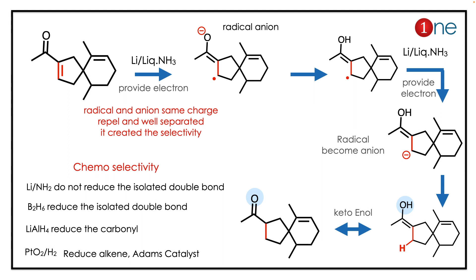The final product comes from keto-enol tautomerism, giving the desired product. The reagent is sodium in liquid ammonia. Here you should understand chemoselectivity — among many functional groups, only one reacts. For example, B₂H₆ (hydroboration) reduces only isolated double bonds; lithium aluminum hydride reduces only the carbonyl; Adams catalyst reduces only alkenes.